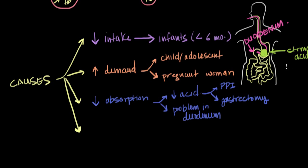The second cause of impaired absorption occurs with some dysfunction in the duodenum itself, and you really see this in patients who have celiac disease — an intolerance of gluten, which is found in wheat, barley, rye, and similar foods. When patients with celiac disease encounter gluten in their diet, it leads to inflammation and destruction of the cells in the duodenum, so the duodenum doesn't absorb nutrients including iron as well, resulting in iron malabsorption.